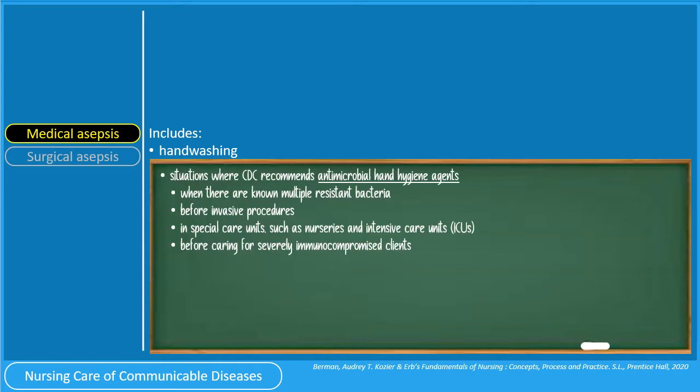What are the situations where the CDC recommends antimicrobial hand hygiene agents? They are recommended when: (1) there are known multiple resistant bacteria, (2) before invasive procedures, (3) in special care units such as nurseries or ICUs, and (4) before caring for severely immunocompromised clients.